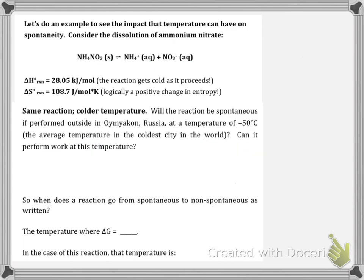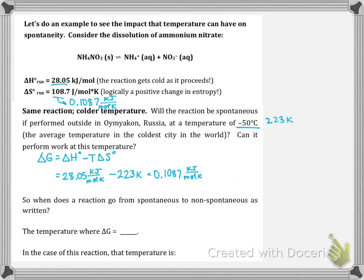Now let's see if the same reaction is spontaneous at a colder temperature. Running the reaction at negative 50 degrees Celsius, which is 223 kelvin, and using the same equation delta G equals delta H minus T delta S with the same thermodynamic values but a different temperature, we calculate delta G of positive 3.81 kilojoules per mole. So the reaction is non-spontaneous at this temperature and we would have to do work on it to make it proceed.